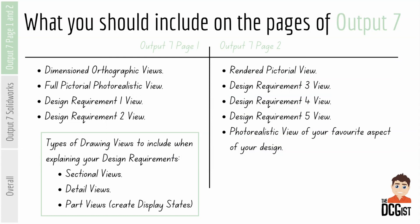Moving on then to the hard copy outputs that are going to go into this output. You have two pages — page one and page two — and these are going to be taken from working drawings done in SOLIDWORKS drawing documents. On the first page you'll have dimensioned orthographic views, a full pictorial photorealistic view made in Photo View 360 in SOLIDWORKS, then your design requirement one view and design requirement two views. That could be done as a sectional view, a detailed view, or some other view — you need to decide which one works best. The types of drawings that will be good to have in these pages include sectional views, detailed views, and part views which you've created display states for.